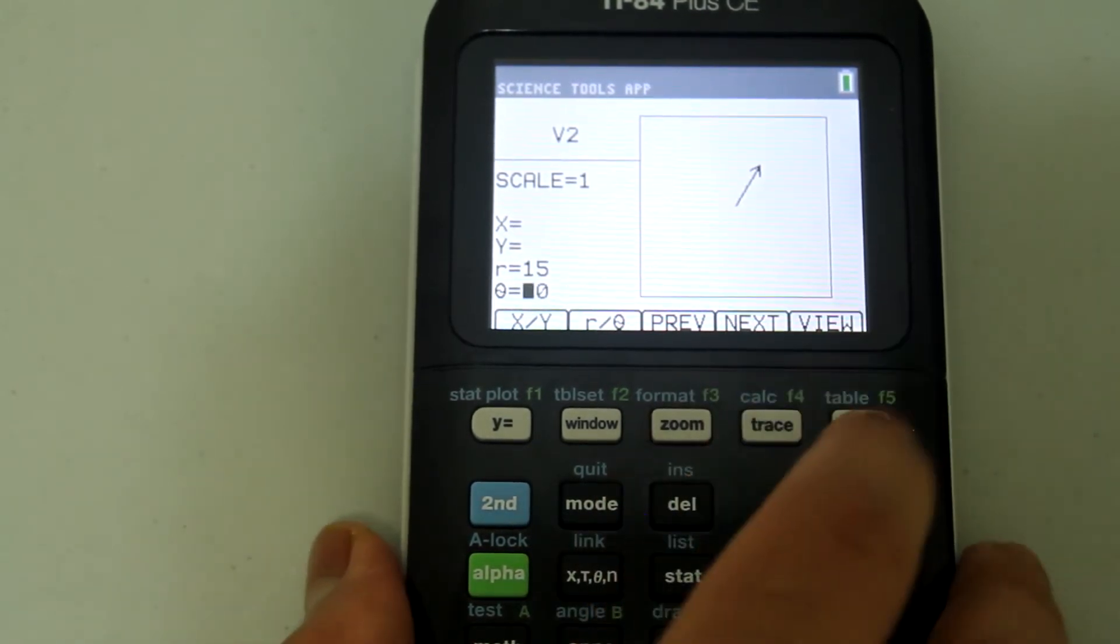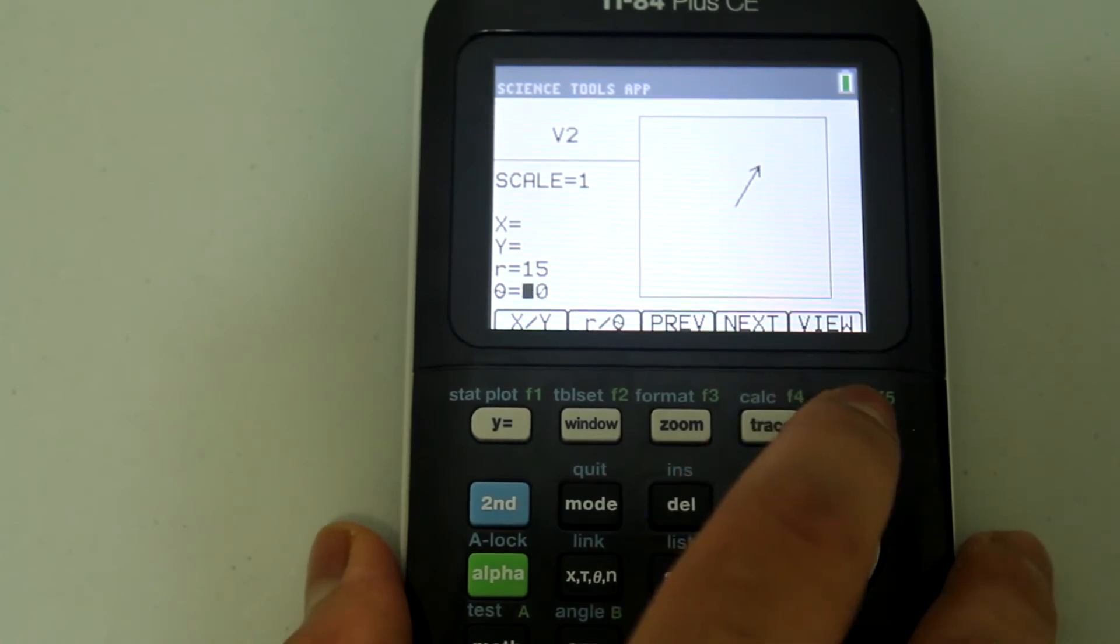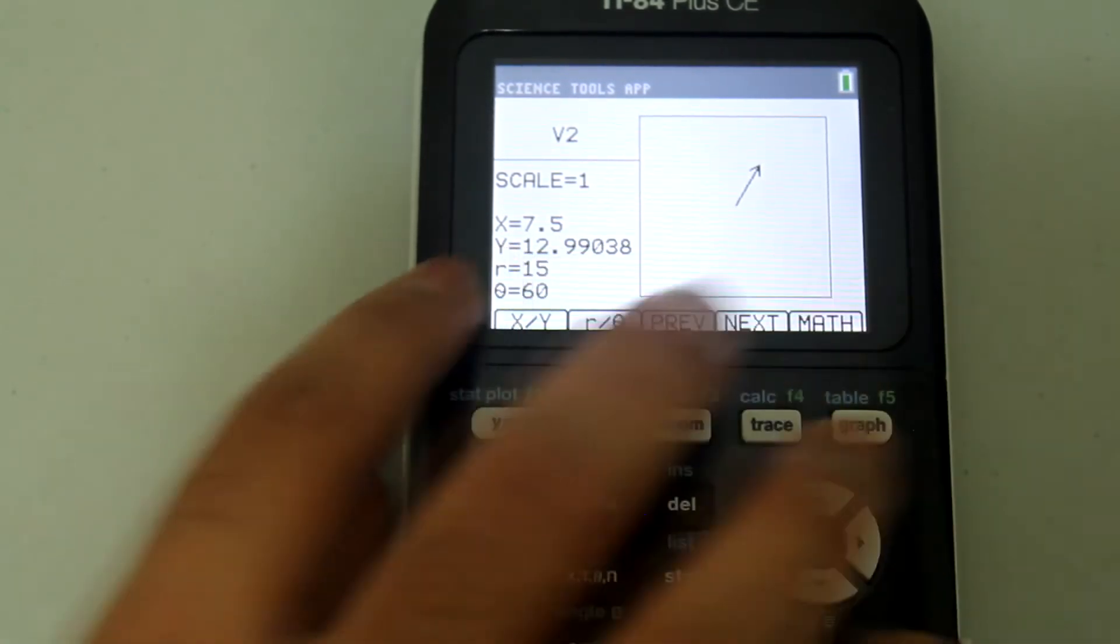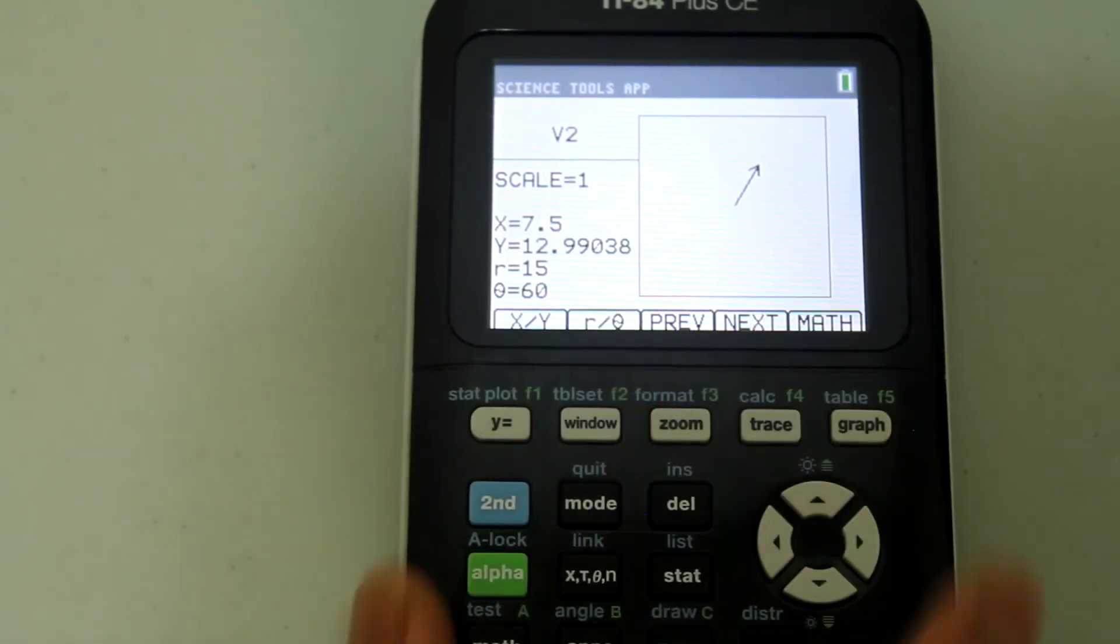Once again hit the button that says graph right under view. And now we can see the x and y components and the vector's also drawn out.